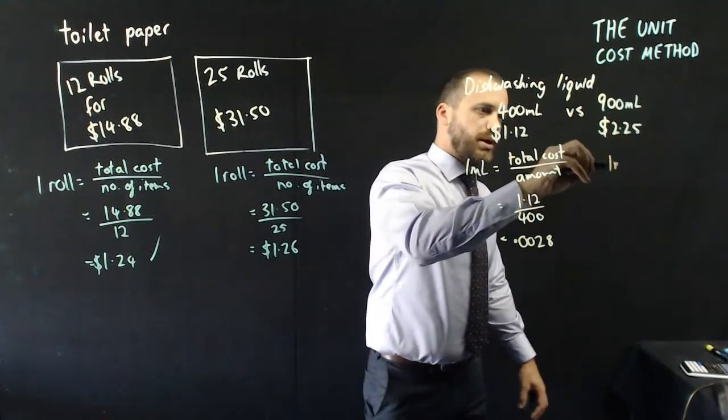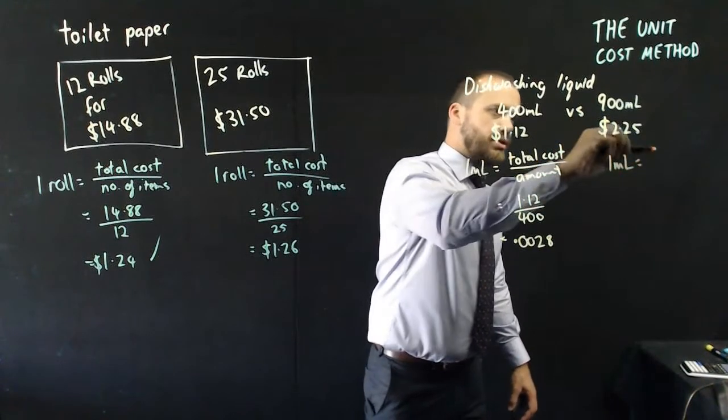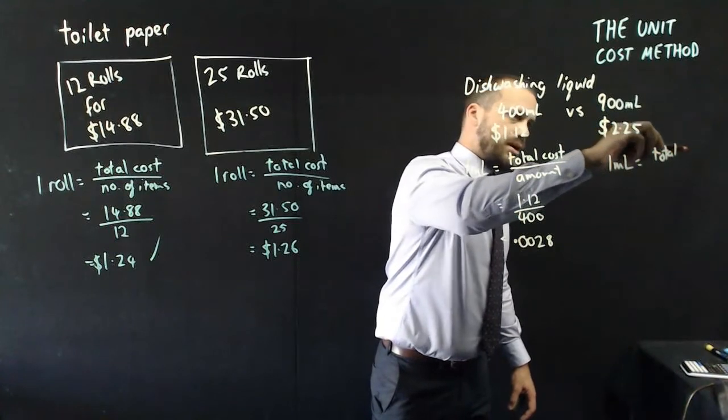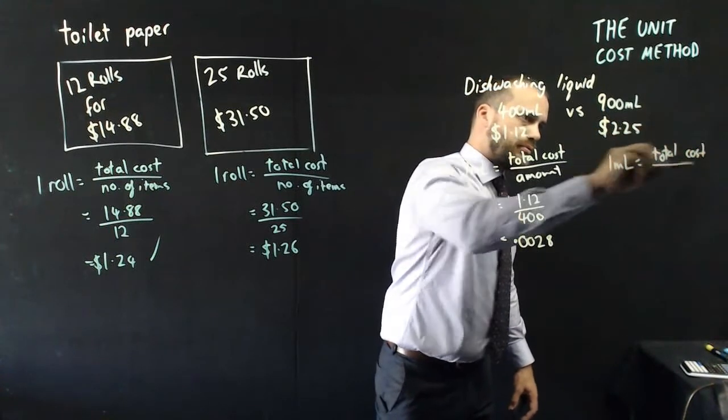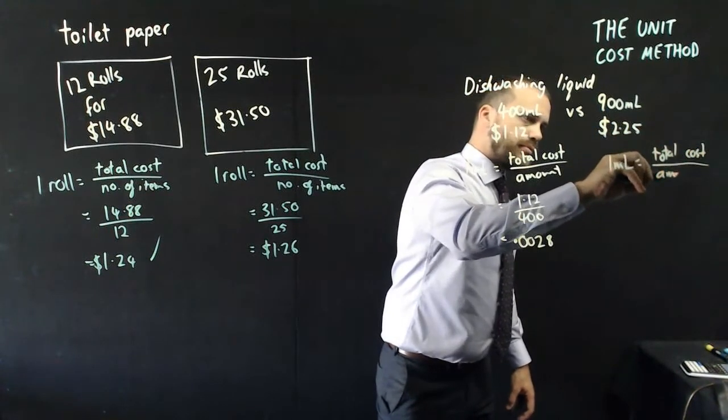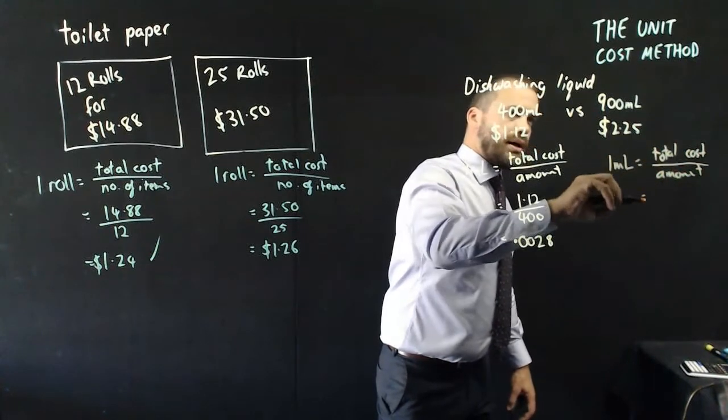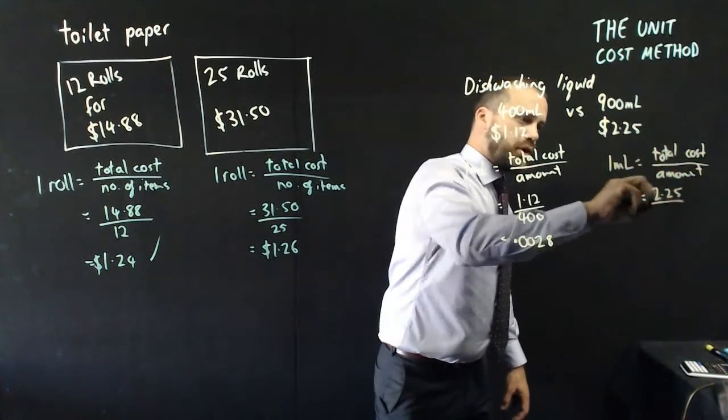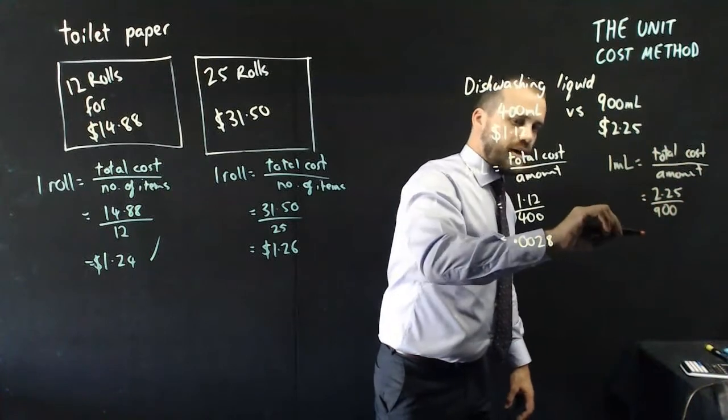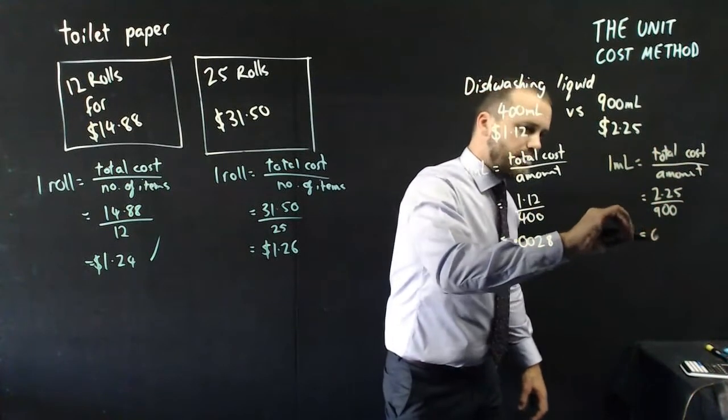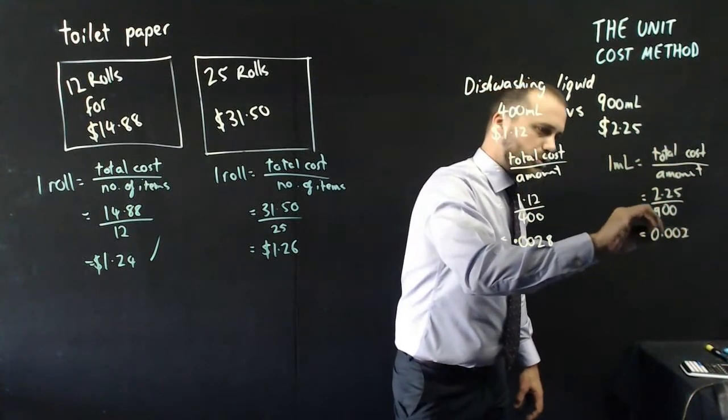What about this one here? One mil is going to be equal to the total cost over the total amount. That's going to be $2.25 divided by 900, and that's going to be 0.0025.